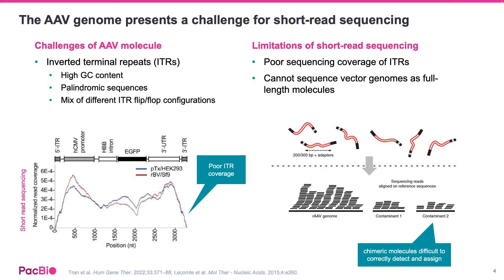All of these things make it particularly difficult for short-read technologies to cleanly sequence through the AAV genome structure and capture all the essential information about what's really happening with the AAV vector. As you can see in the figure, short-read sequencing usually leads to low coverage of the ITR and makes it difficult to correctly detect and assign chimeric molecules.